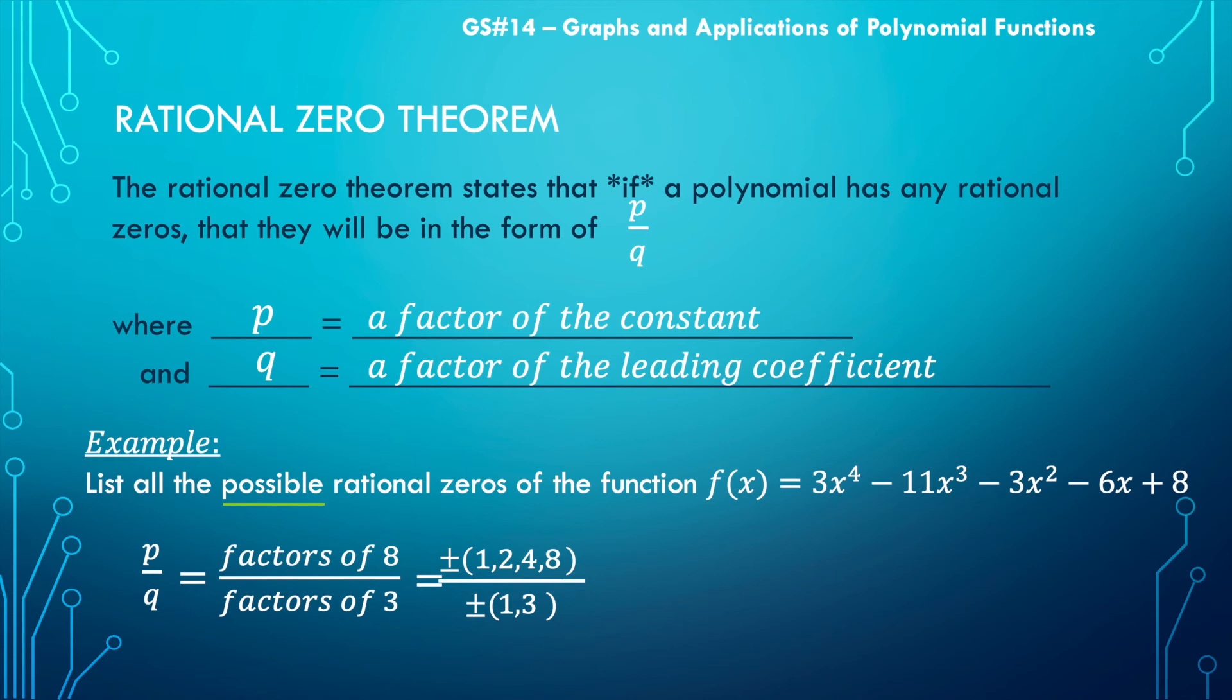Okay, so we've done the hard work. Now all we do is actually list them out. So the way we would list them out is we're going to focus on the first value in our denominator. So we're going to look at that one, and now we're going to list everything that's in the numerator divided by one.